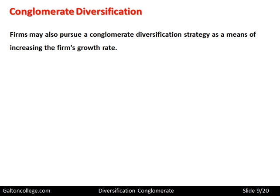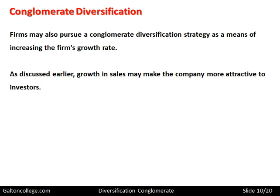Firms may also pursue a conglomerate diversification strategy as a means of increasing the firm's growth rate — that may be one of the primary concerns. The company wants to grow, so it starts or acquires a totally different business and runs it in this conglomerate sense. Growth in sales may make the company more attractive for investors. And if a business is conglomerate with different sections, it may be seen as somewhat risk averse — it's spreading its risk.